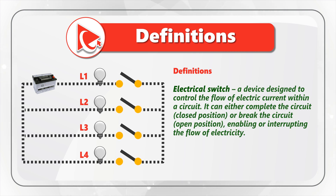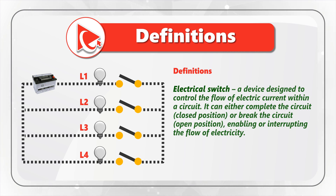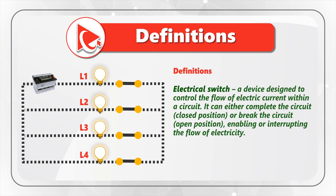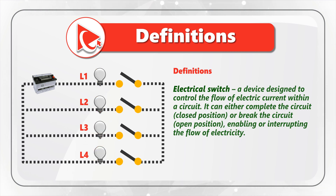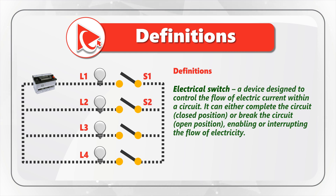We also have four switches. A switch is a device designed to control the flow of electric current through the circuit. A switch can either complete the circuit in its closed position or break the circuit in its open position, enabling or interrupting the flow of electricity. Since we have four of them, let's give each switch a unique ID: S1, S2, S3, and S4.